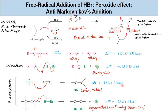Both of the propagation steps are moderately exothermic, allowing them to proceed faster than the termination steps. Note that each propagation step starts with one free radical and ends with another free radical. Therefore, the number of free radicals remains constant until the reactants are consumed, so that free radicals have no other option than to come together and terminate the chain reaction.